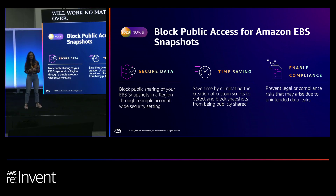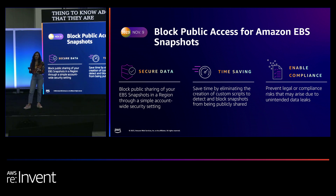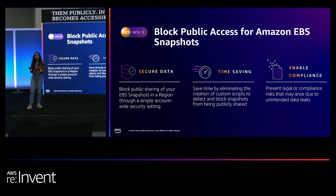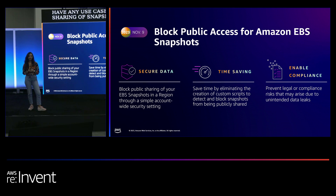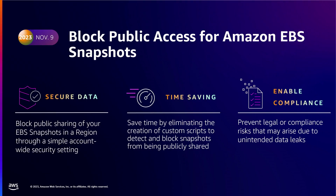The next feature is block public access for Amazon EBS snapshots. Snapshots are private by default, but you can choose to share them with specific accounts or even publicly, making them accessible to all AWS users. Most customers don't have use cases for public sharing, so they can block public access through a single account-wide regional setting. It's very easy to enable and is available in two modes. Let's get to the demo.